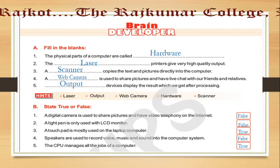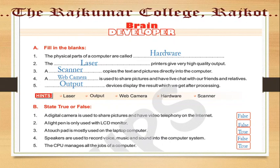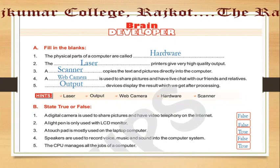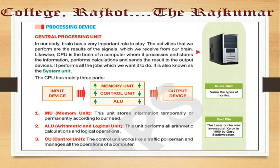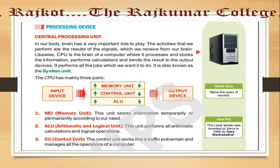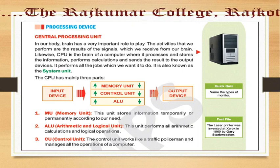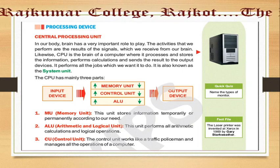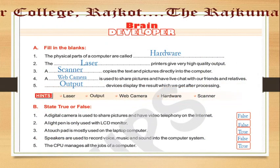The next one: the CPU manages all the jobs of a computer. This statement is true. The CPU is like our brain — it manages all the jobs of a computer. I can show you here in the central processing unit paragraph: it performs all the jobs which we want it to do, so it manages all jobs of a computer. This statement is true.